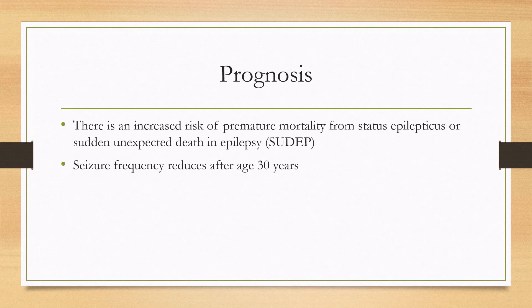What's the prognosis like? These patients are at an increased risk of premature mortality, and it can be from status epilepticus or SUDEP—sudden unexpected death in epilepsy. If they make it to 30 years old, seizure frequency typically reduces after that.